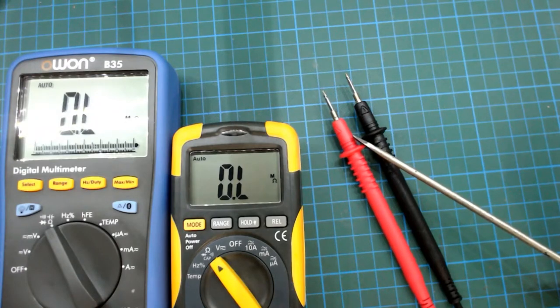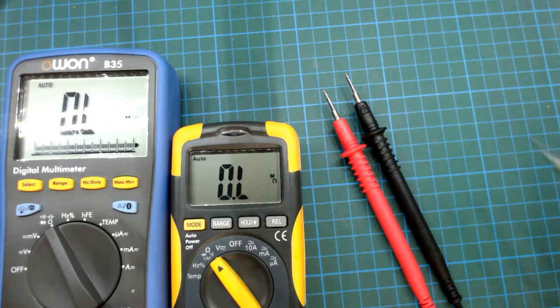A continuity test doesn't necessarily mean that there's a short between two points, although that is quite normal. It could also mean that there's very low resistance. Most multimeters will say something around 5 ohms is considered continuity. Anything less than that and it will tone.